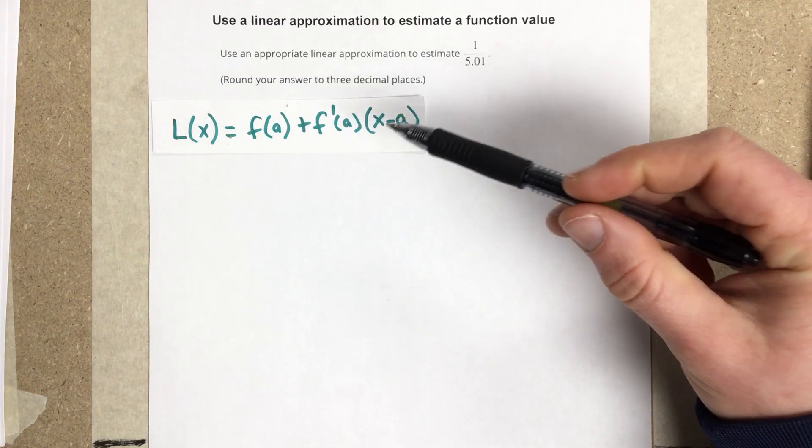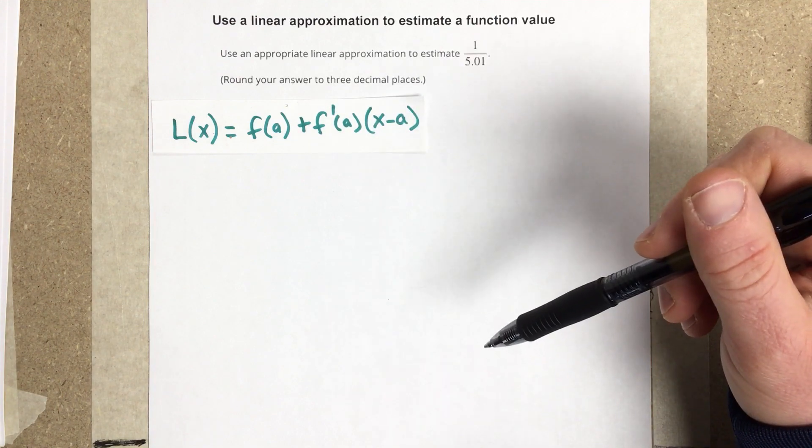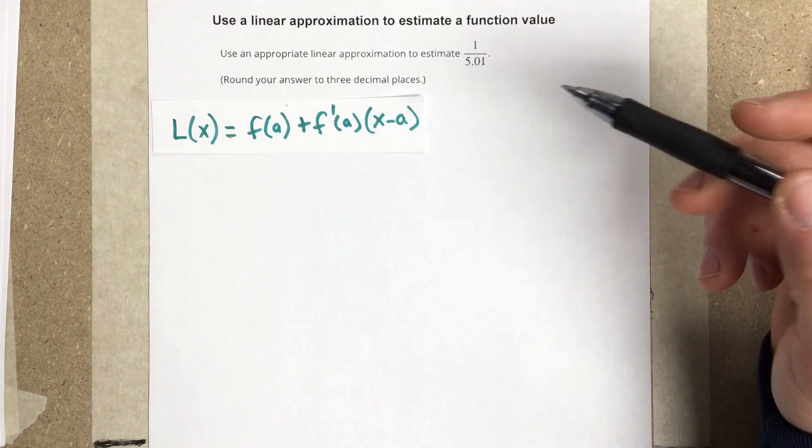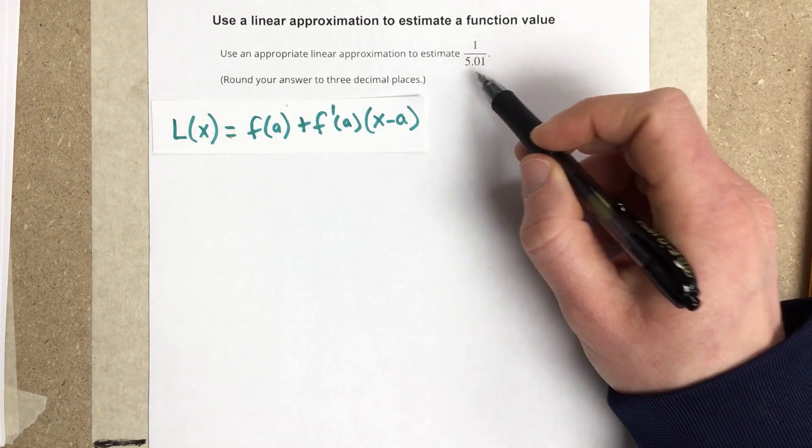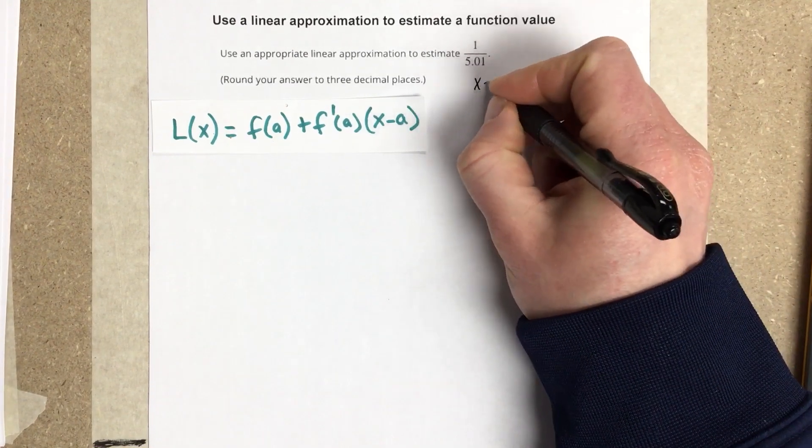And they're basically saying in this section that the tangent line gives a pretty good approximation for values that are close to the value that you're looking for here. In our case, x is 5.01.